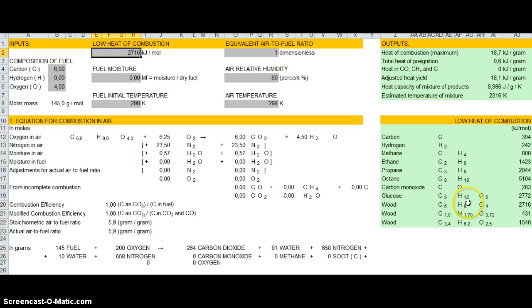Ok, let's try now with another possibility of representing wood, which is one atom of carbon, 1.7 of hydrogen and 0.72 of oxygen.